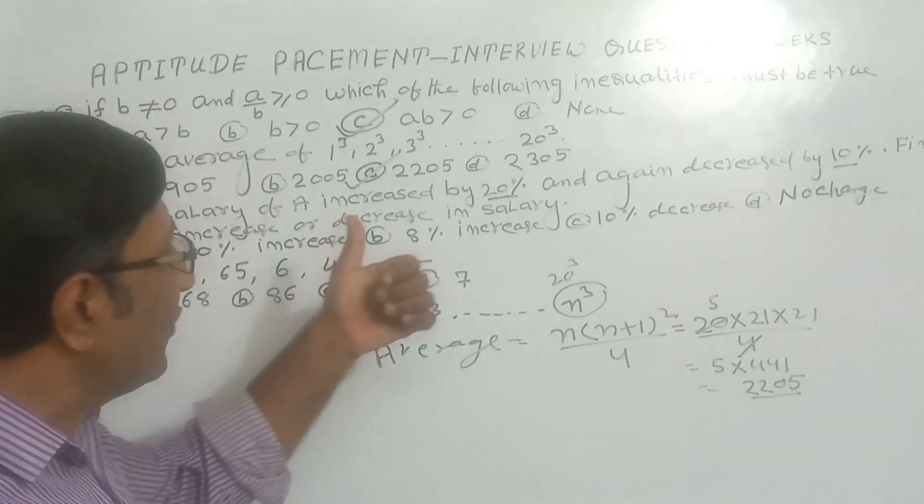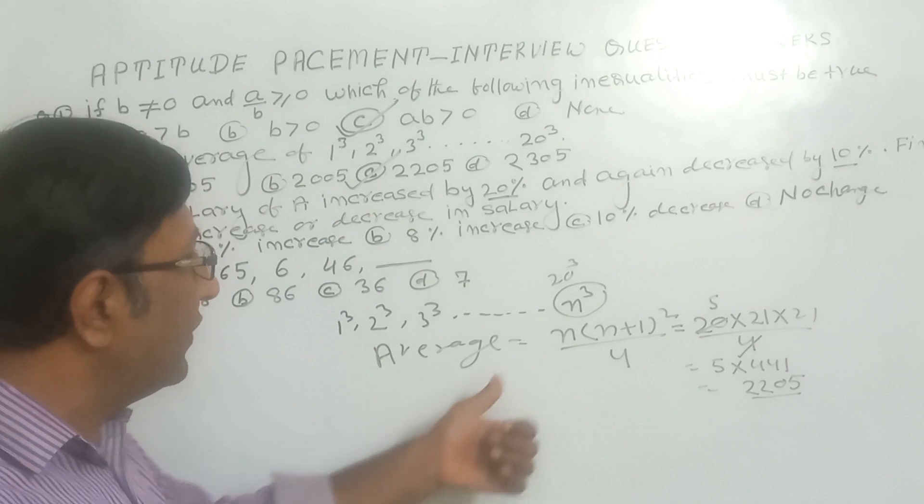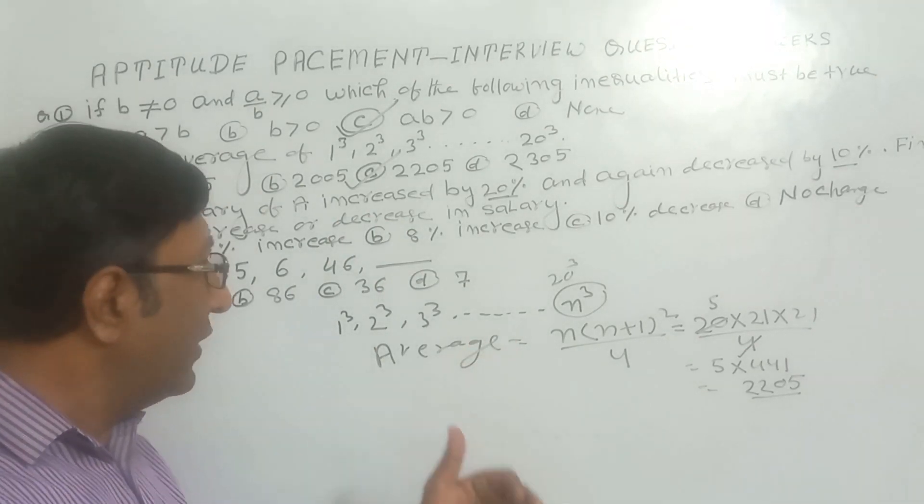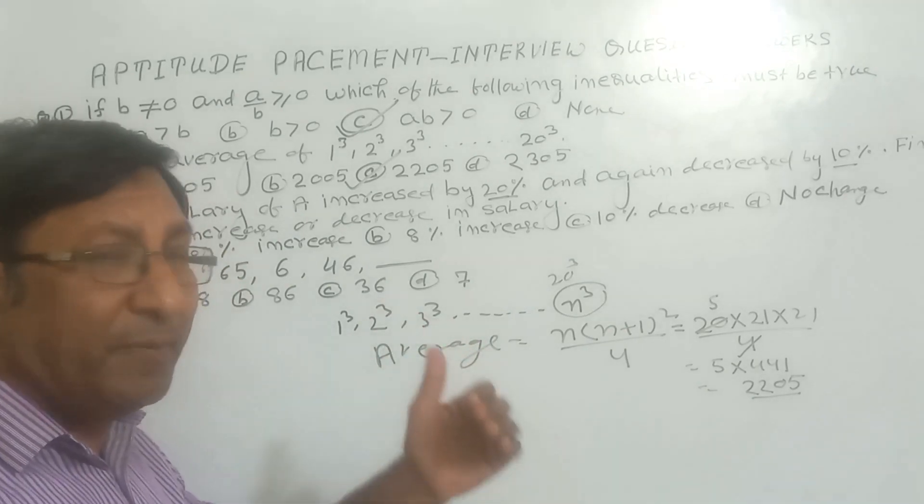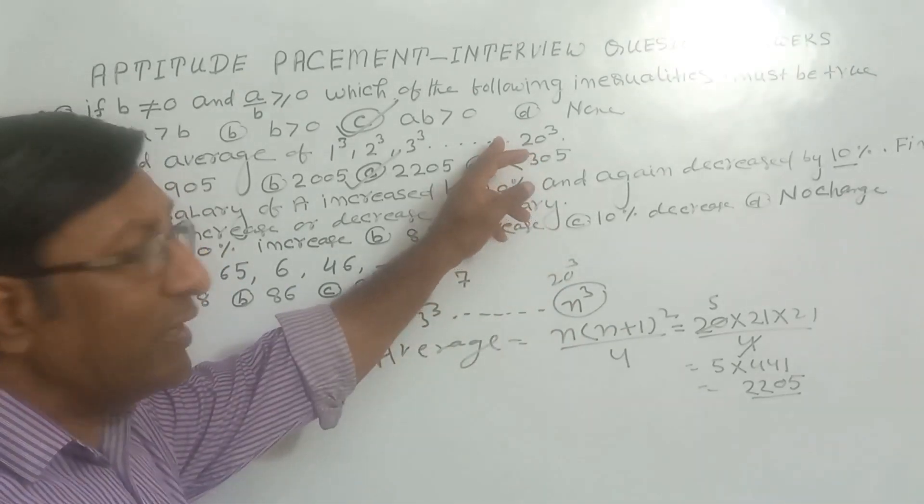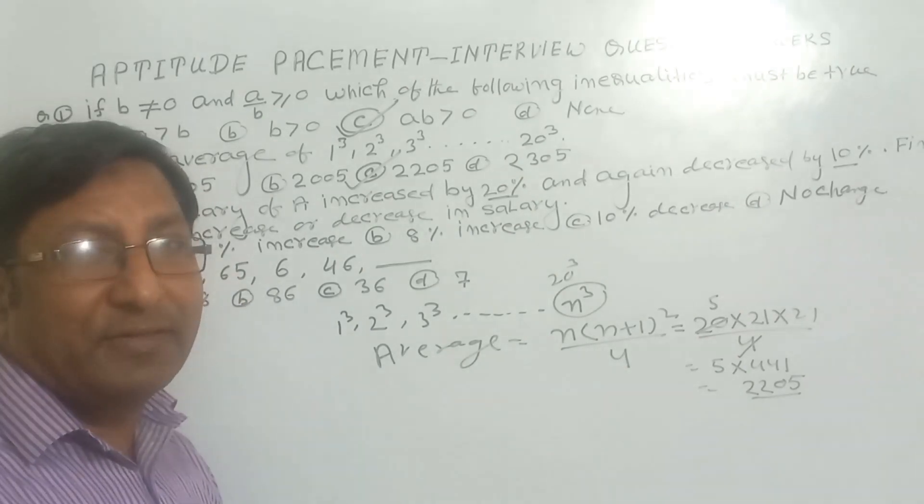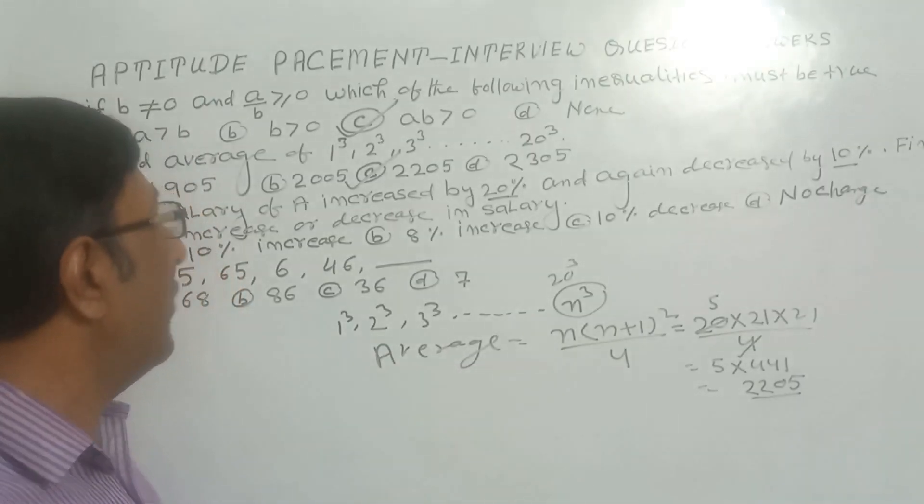We can solve any question of this with the help of this technique. When there is 1Q, 2Q, 3Q up to NQ, and maybe 20, maybe 10, maybe 50, maybe 100. Here N is 20, so our correct answer is 2205.